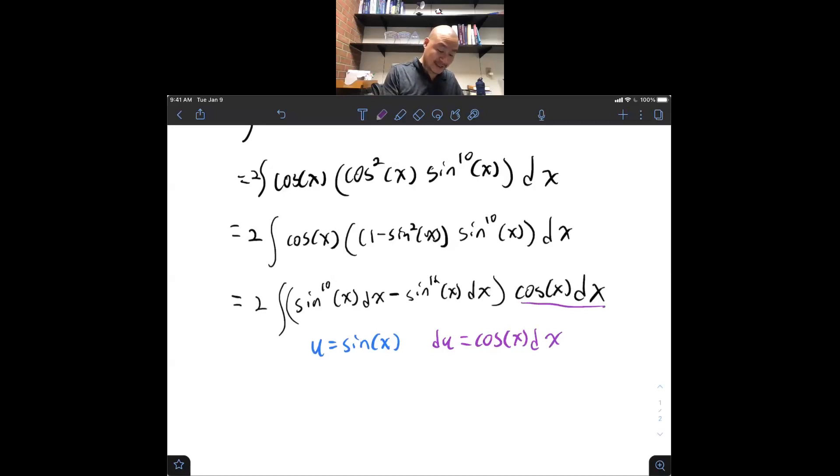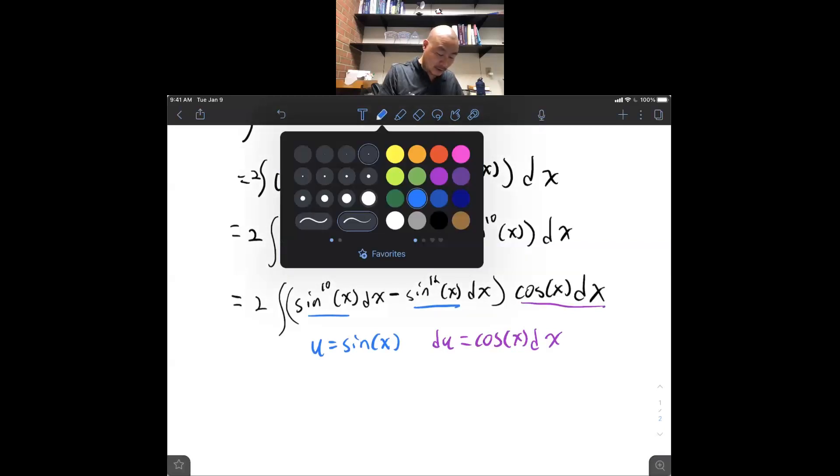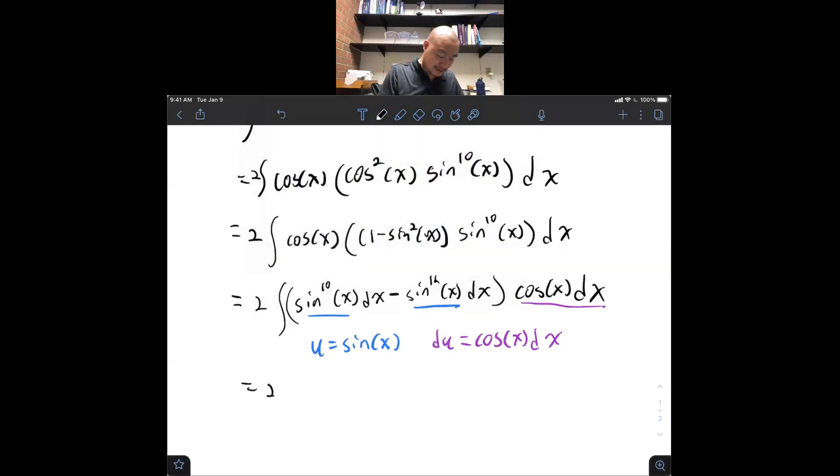Where there's cosine of x, dx, there's a bunch of u's here, and so this whole deal gets written as 2 u to the 10th, minus u to the 12th du.